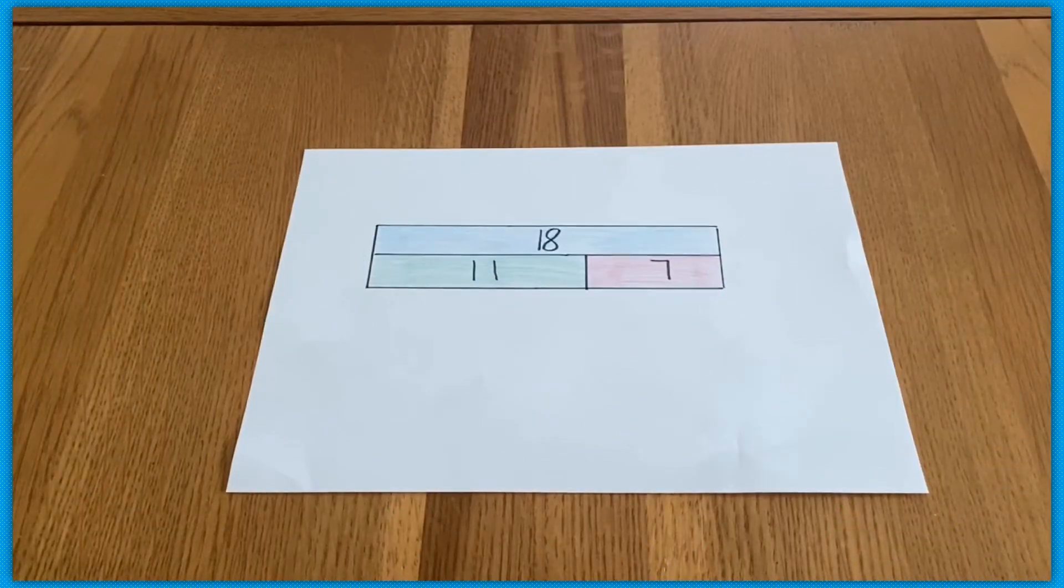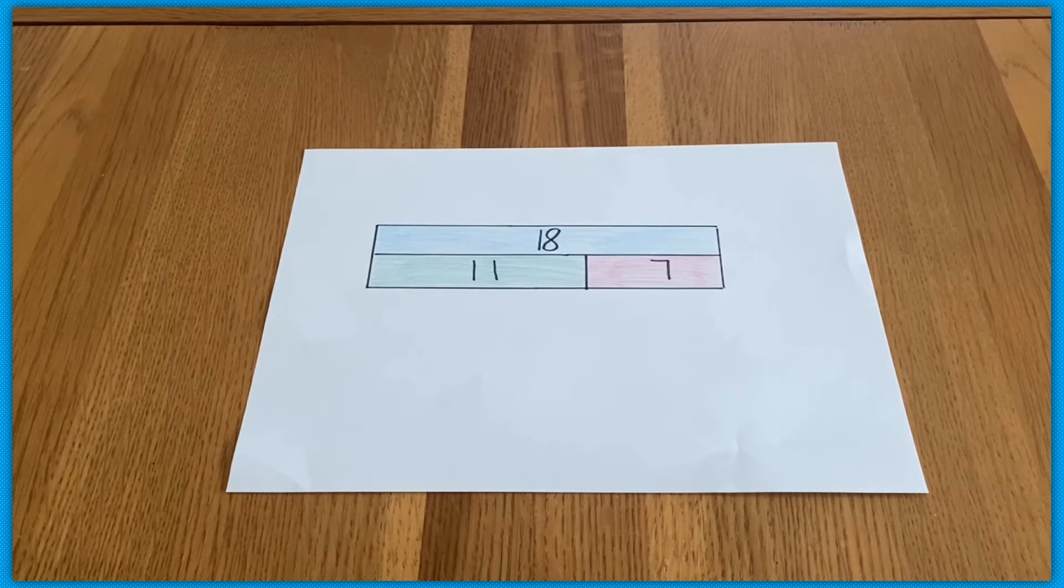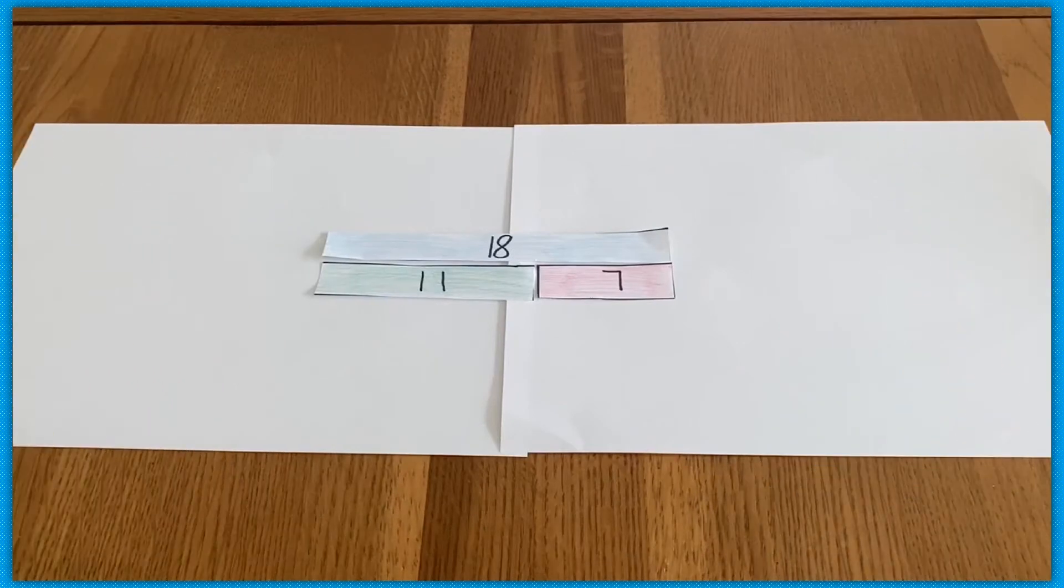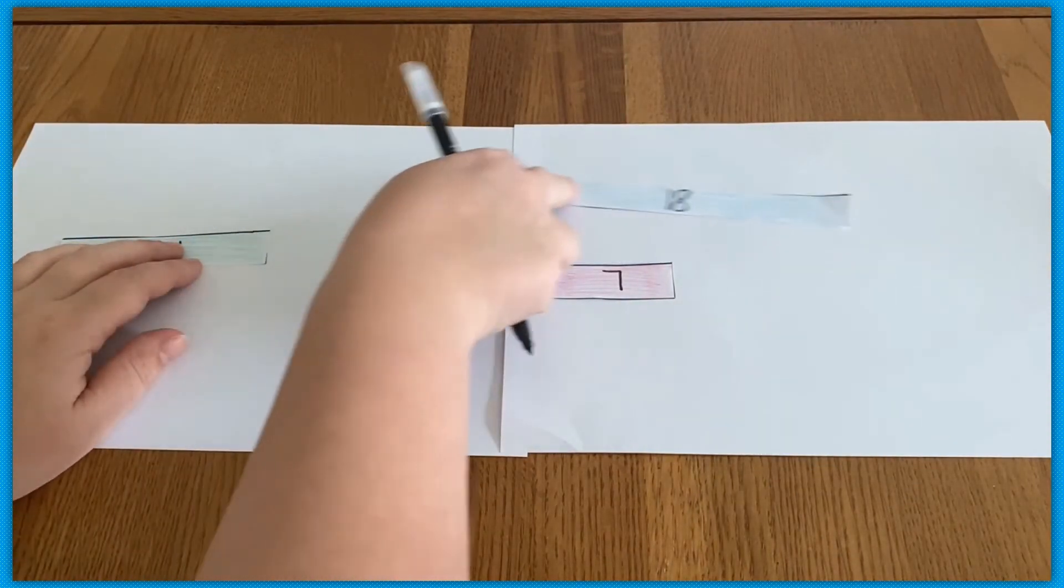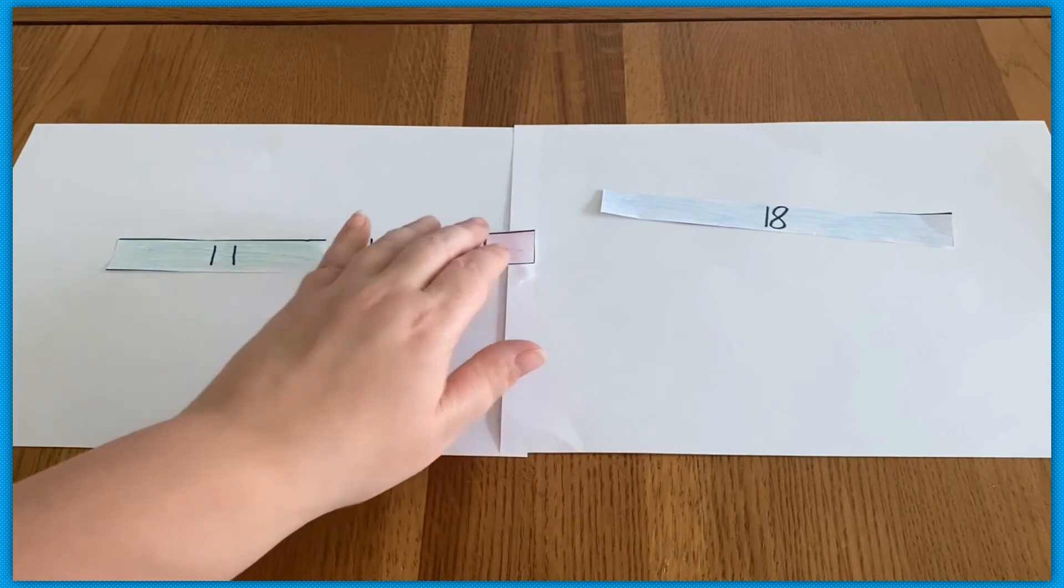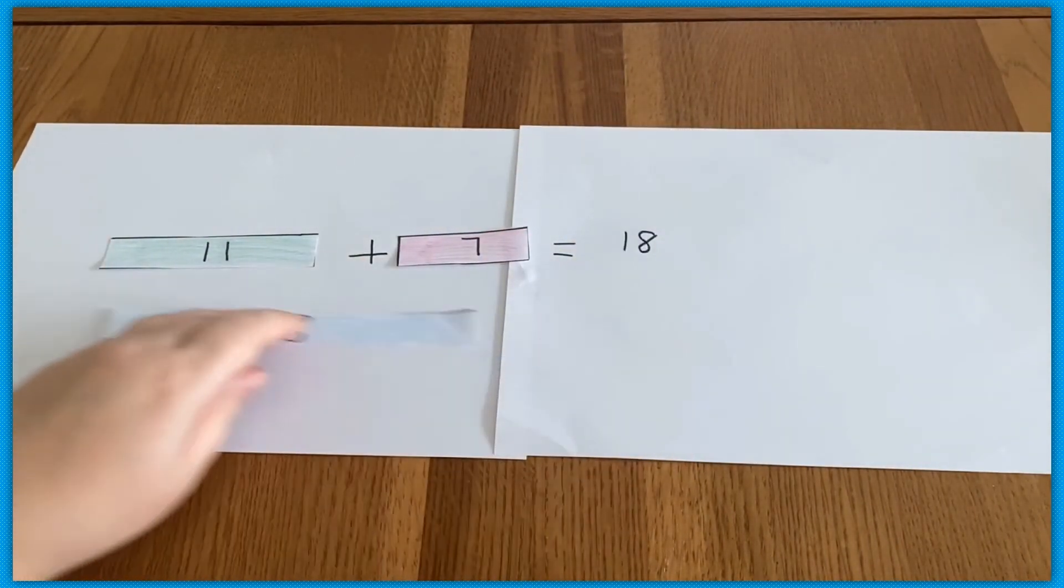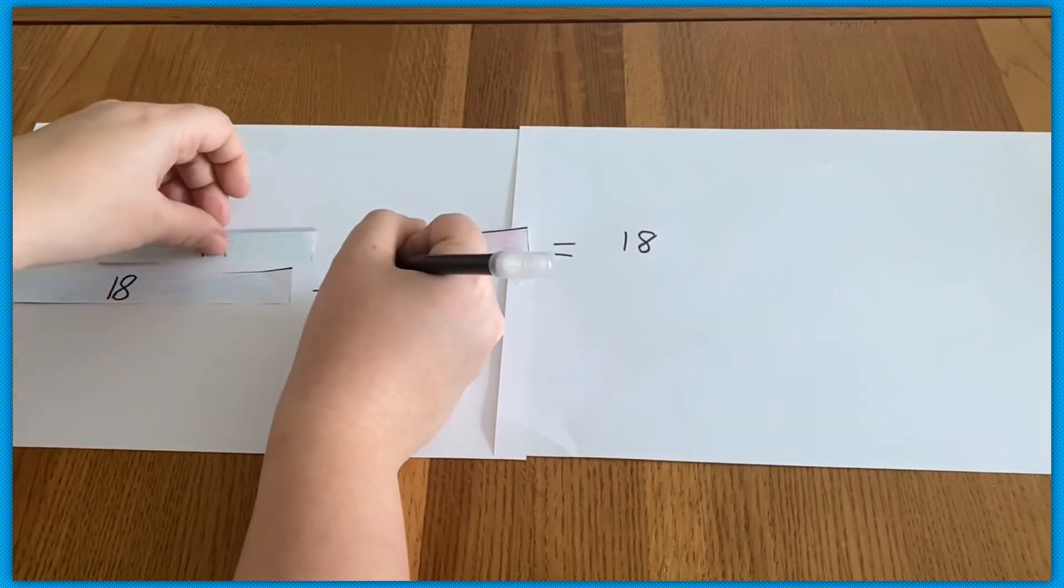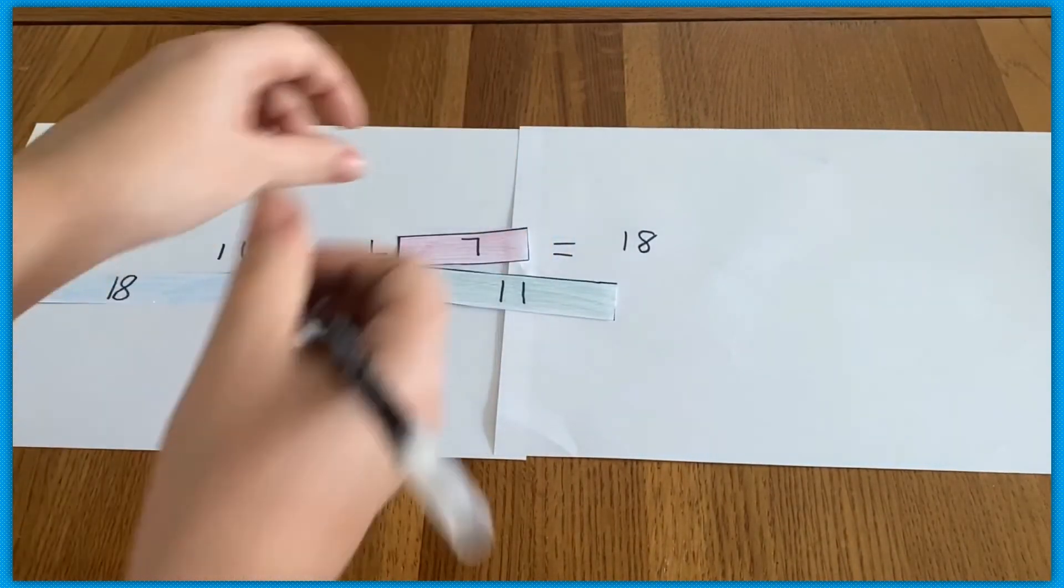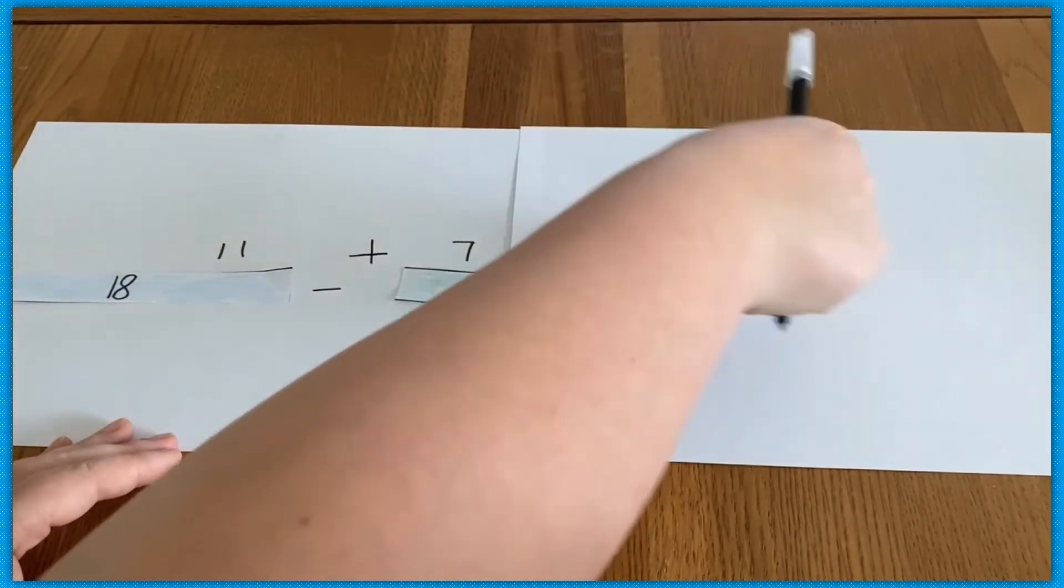To help learners visualize how using the inverse works, you could encourage them to draw out bars to represent the numbers in their calculation, like this: 11 add 7 equals 18. By cutting out and moving the bars, they can easily see how 18 subtract 11 leaves us with 7 and that 18 subtract 7 leaves 11.